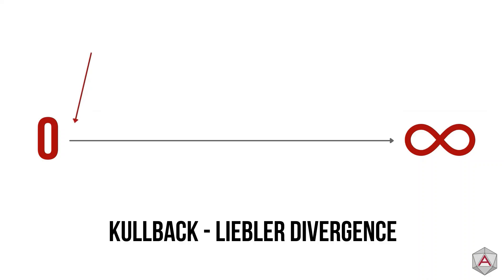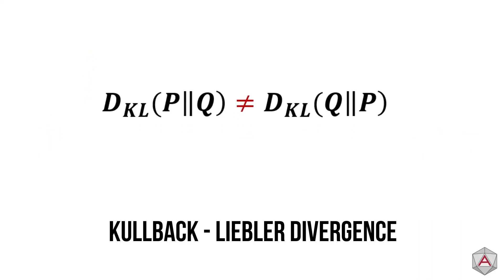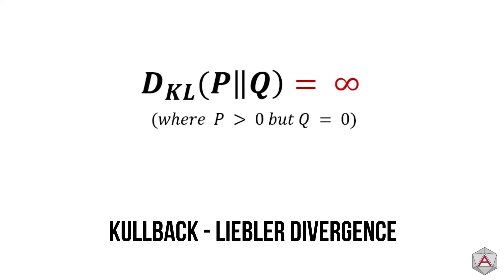Before we leave, there are some things to know about KL divergence. This metric is not symmetrical. That means that KL divergence of P to Q does not equal the KL divergence of Q to P. KL divergence also has limits when it comes to probability distributions that equal 0, specifically on the Q dataset. This will cause a divide by 0 error and will result in the KL divergence reaching infinity, so it's best to keep that in mind.